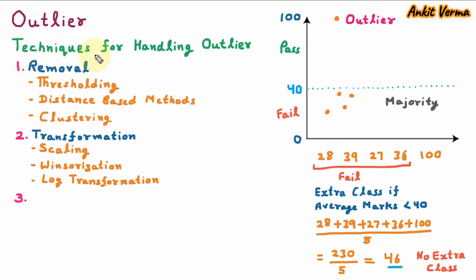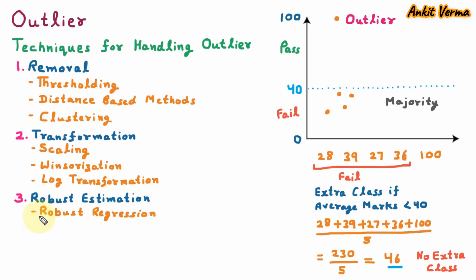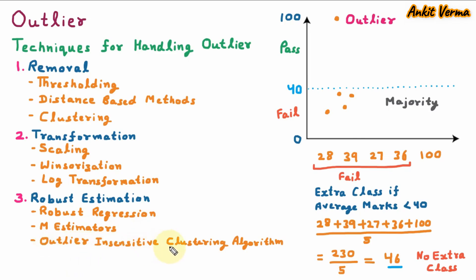The third category under techniques for handling outlier is robust estimation — algorithms are used which are less sensitive to outlier. If the outlier is present, the algorithm will be less affected. The first under robust estimation is robust regression — algorithms like L1 regularized regression or Huber regression are used which are less influenced by outlier. Next is M-estimators — it estimates model parameters with less weight so they have less impact from outlier. Next is outlier-insensitive clustering algorithm — algorithms like DBSCAN are used which are less influenced by outlier.